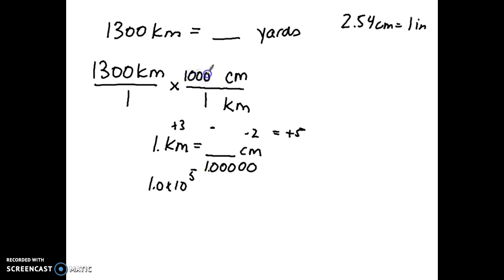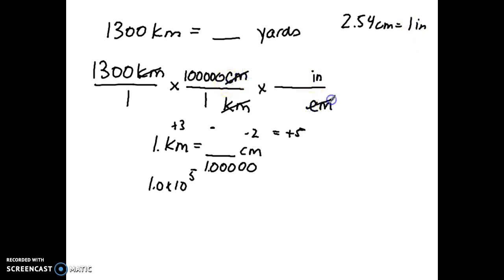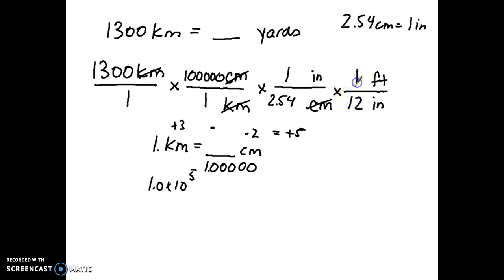Now I use the centimeters-to-inches conversion: 2.54 in the denominator with centimeters, and one inch in the numerator. That cancels centimeters. From inches, I can go to feet — 12 inches equals one foot, which I think students should know. Then from feet to yards: three feet equals one yard. Now I've reached my target unit. All I have to do is multiply all the numerators together and divide by all the denominators.